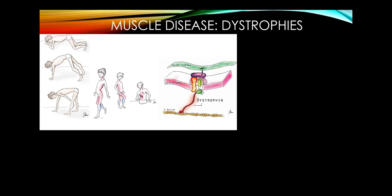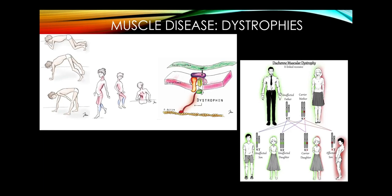In the muscular dystrophy category, the one you need to know is Duchenne's. This is X-linked recessive. Girls who get the abnormal X chromosome are carriers, not symptomatic. There's a 50-50 chance of either being a carrier or, for boys, being symptomatic. It presents with proximal pelvic girdle weakness but calf hypertrophy, and plantar flexion is relatively preserved.